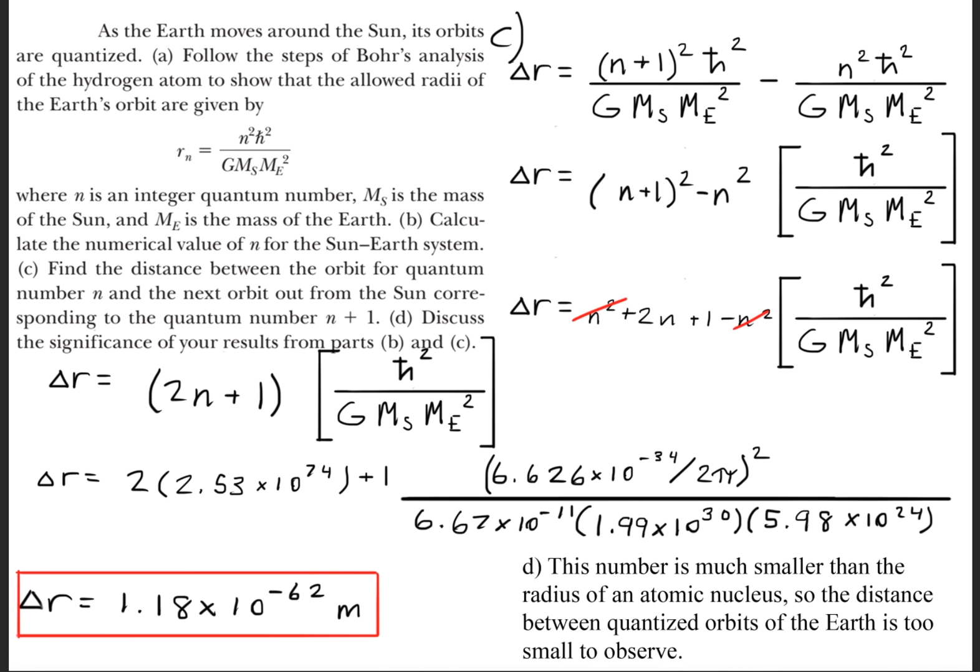Part D is asking us to discuss the significance of our results. I'll just read this out loud. This number, 1.18 times 10^-62, is much smaller than the radius of an atomic nucleus. So the distance between quantized orbits of the Earth is too small to observe.